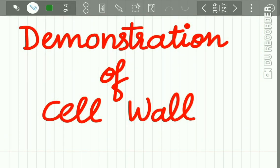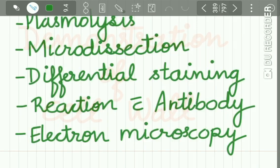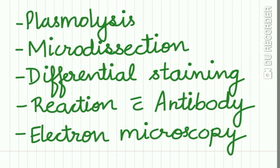Now how is the demonstration of the cell wall done? The cell wall cannot be seen by light microscopy with simple dyes, so special methods are used. First is plasmolysis: bacteria are placed in hypertonic saline, causing shrinkage of the cytoplasm while the cell wall retains its original shape and size. Second, microdissection can be used. Third, differential staining methods can be used. Fourth, reaction with antibody helps in demonstration of the cell wall, and finally electron microscopy can be used.